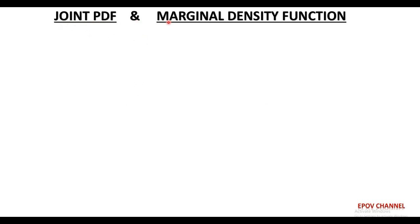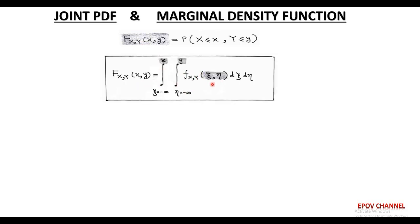We now extend the discussion from joint PDF to the marginal density function. The joint distribution function, capital F(x, y), equals the probability of events X ≤ x and Y ≤ y, and can be recovered from the joint PDF using double integration. For convenience we use ψ corresponding to real value x and η corresponding to real value y. So capital F(x, y) equals the double integration of small f(ψ, η) dψ dη, with limits ψ from minus infinity to x and η from minus infinity to y.